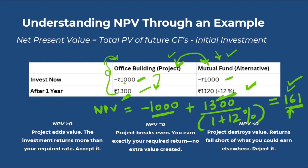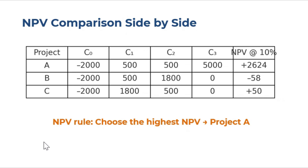The NPV decision rule: if NPV is greater than zero, the project adds value — investment returns more than your required rate. If NPV equals zero, for example if the office building returns $1120 instead of $1300, you earn exactly the required return and no extra value is created. If NPV is less than zero, the project is destroying value. This is how you evaluate whether to invest in a project.